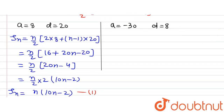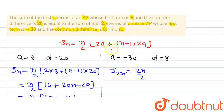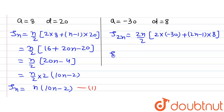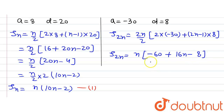The question asks for the sum of 2n terms of this AP. Using the formula n by 2 times (2a + (n minus 1) times d), we replace n by 2n. So we have 2n times (2 times minus 30 plus (2n minus 1) times 8), giving us S_2n equal to n times (minus 60 plus 16n minus 8), which equals n times (16n minus 68). This is equation 2.